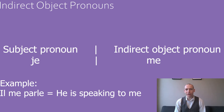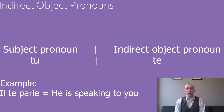The indirect object pronoun for je is me. You might notice this is the same as the direct object pronoun. For example, il me parle — he is speaking to me. The indirect object pronoun for tu is te. This is also the same as the direct object pronoun. For example, il te parle — he is speaking to you.